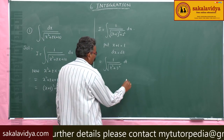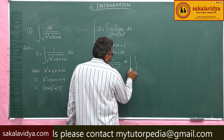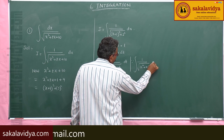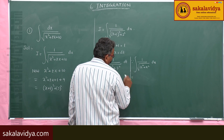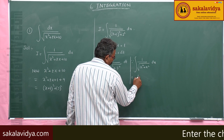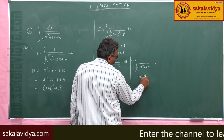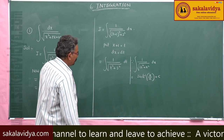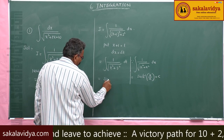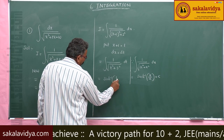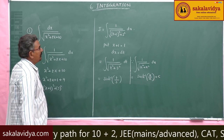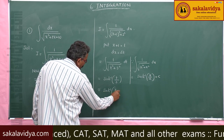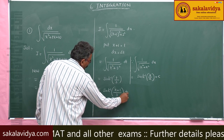We have the formula: the integral of 1 divided by the square root of a squared plus x squared dx equals sinh⁻¹(x/a) plus constant of integration. Using this, we write sinh⁻¹(t/3). Since t equals x plus 1, the answer is sinh⁻¹((x plus 1)/3) plus constant of integration.